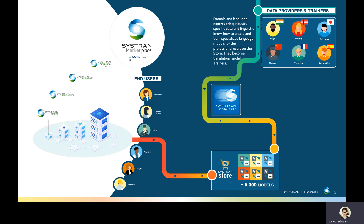In 2019, Cistron launched the Cistron Marketplace, a platform on which different entities — namely the trainers — produce neural translation models using the Cistron Model Studio training tool and their own data, and sell these models to end users by publishing them to the Cistron catalog. The Cistron Marketplace's aim is to propose financial, medical, legal, automotive, or any other specialized translation models to end users in any language.